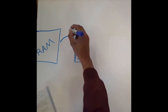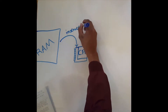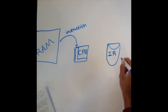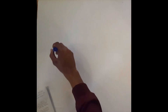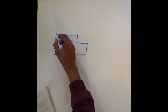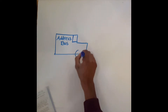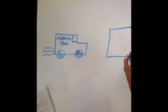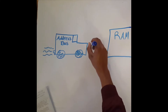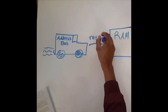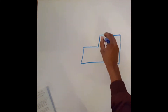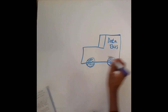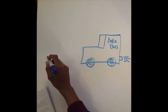Firstly, the CPU fetches an instruction from the memory and puts it into the instruction register. This is a small temporary storage space that holds each instruction after it has been retrieved, almost like a pocket. This is accomplished by using the address bus to send the request to the main memory, then returning the data stored in that location back to the CPU via the data bus.